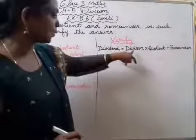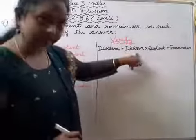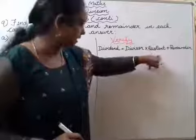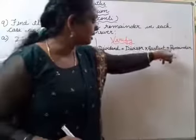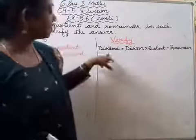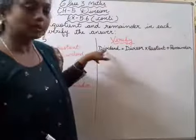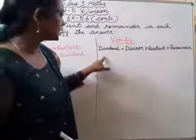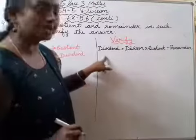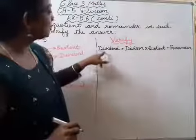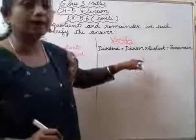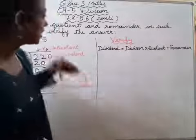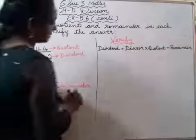Dividend is equal to divisor multiplied by quotient plus remainder. Yeh formula aapko yaad rakhna padega. Agar verification ke liye poocha hai, to aapko you have to write this formula. Then only you have to continue, then only you can verify the answer.